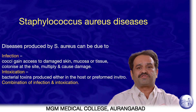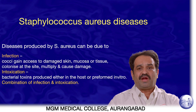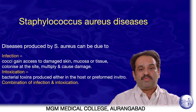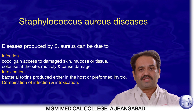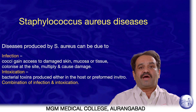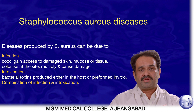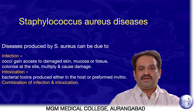Diseases of Staphylococci are of three types: infection, intoxication, and a combination of both. In infection, Staphylococci gain entry into damaged skin, mucosa, or tissue, where they colonize, multiply, and cause tissue damage. In intoxication, either the bacteria enters the body and elaborates toxin internally, or the toxin is elaborated outside the body in food, and the person ingests the preformed toxin.